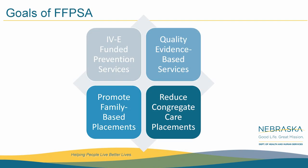There are four goals we are looking at for Family First. The first is prevention of removal of a child from their home into foster care, focusing on increasing services available to families and caregivers of candidates for foster care. There is an emphasis on identifying and implementing quality evidence-based services that are trauma-informed. The third goal is to reduce congregate care placements. The fourth goal is that if a child is placed into foster care, there is an emphasis on family-based placements.